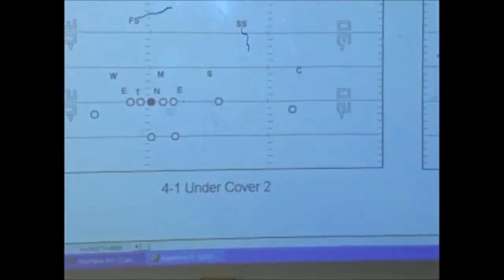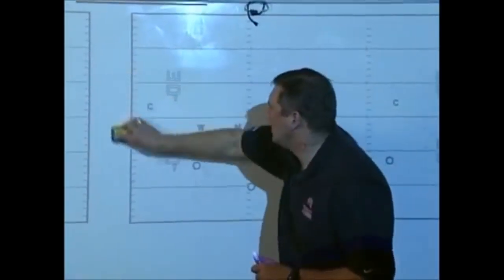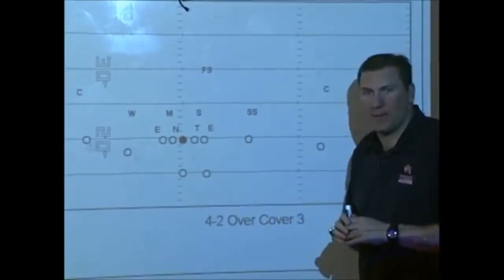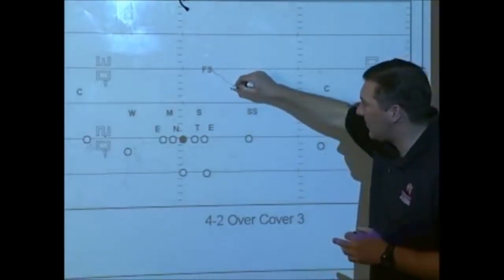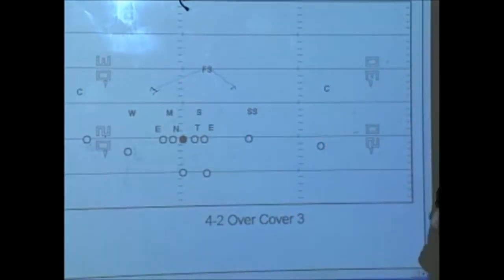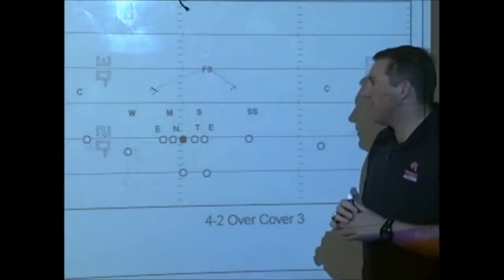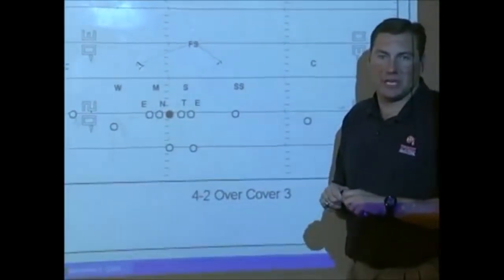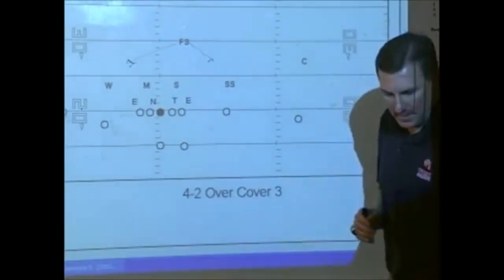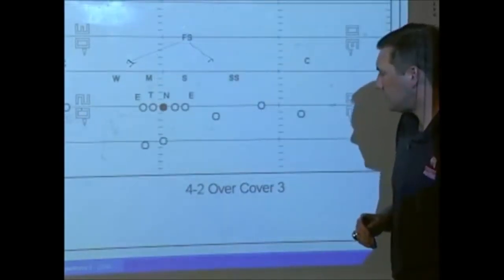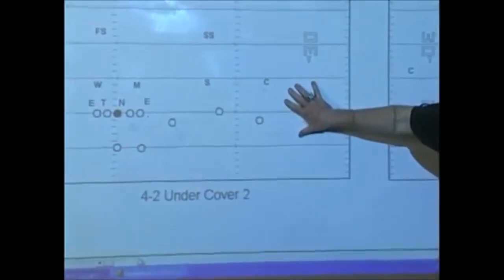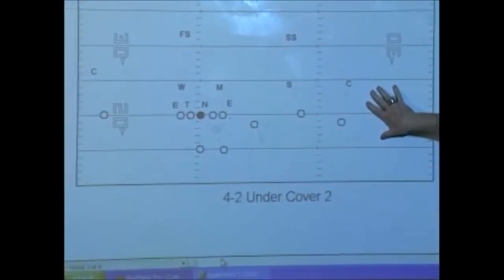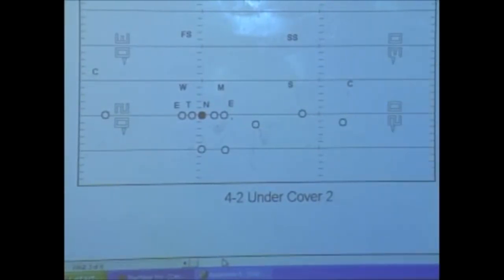As we change to a one-high look, our quarterback can feel very secure in the passing game — the field is spread, he is protected, and the defense cannot pressure without bringing their free safety out of the middle of the field to declare which side the pressure is coming from. We also feel that not only 2x2 but 3x1 sets create great stress on the defense in two-high situations, as the field has been spread and the defense is forced to cover down on receivers and declare what they're going to do before the snap.